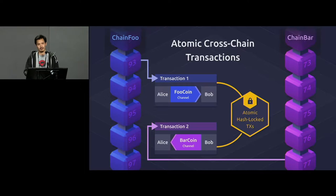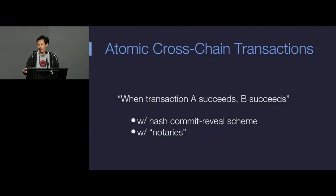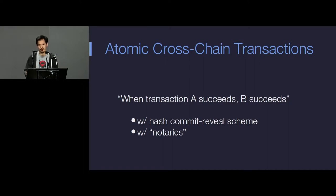The first kind of interchain interoperability was documented many years ago and it's called atomic cross-chain transactions. The idea is that there are two chains and you can atomically bind two transactions to happen at the same time with a hash commit reveal scheme. When one transaction succeeds, you know the other is going to succeed, so you can do interesting things like token exchange between two blockchains — for example, I give Alice some foo tokens and I'll get bar tokens from Alice because these two transactions on two different chains are atomically bound with a commit reveal scheme.